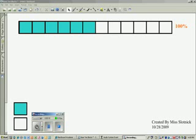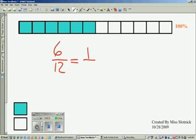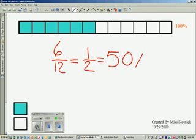I know that six twelfths is equivalent to one half. I also know that one half is worth 50% of the whole. So now I know that six twelfths is equivalent to 50%.